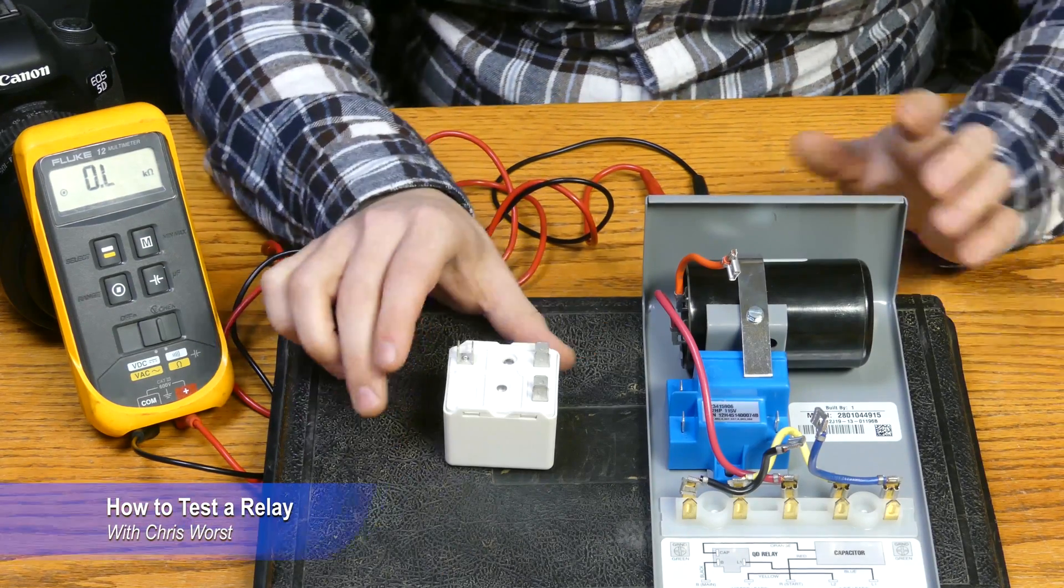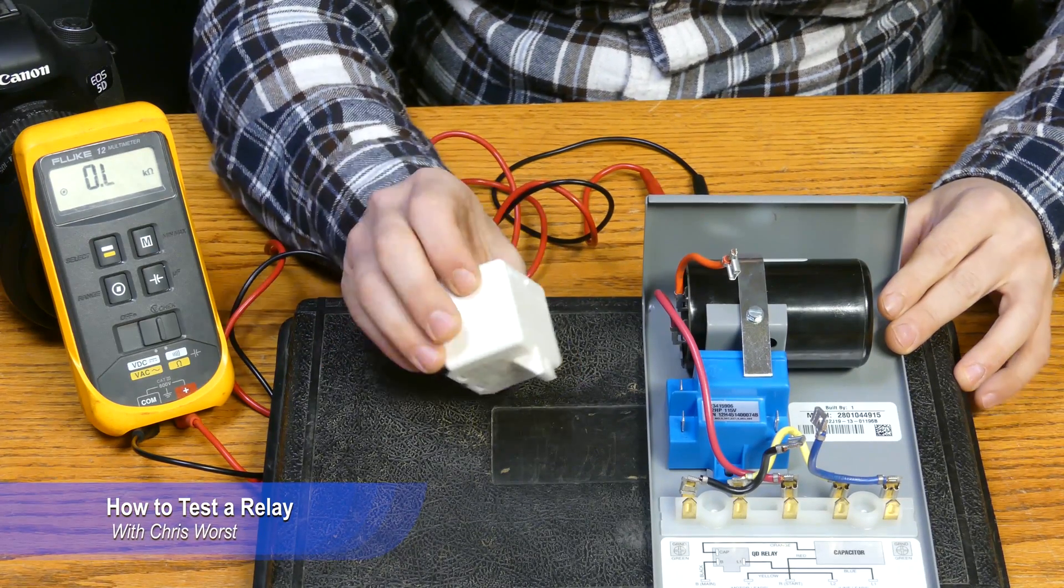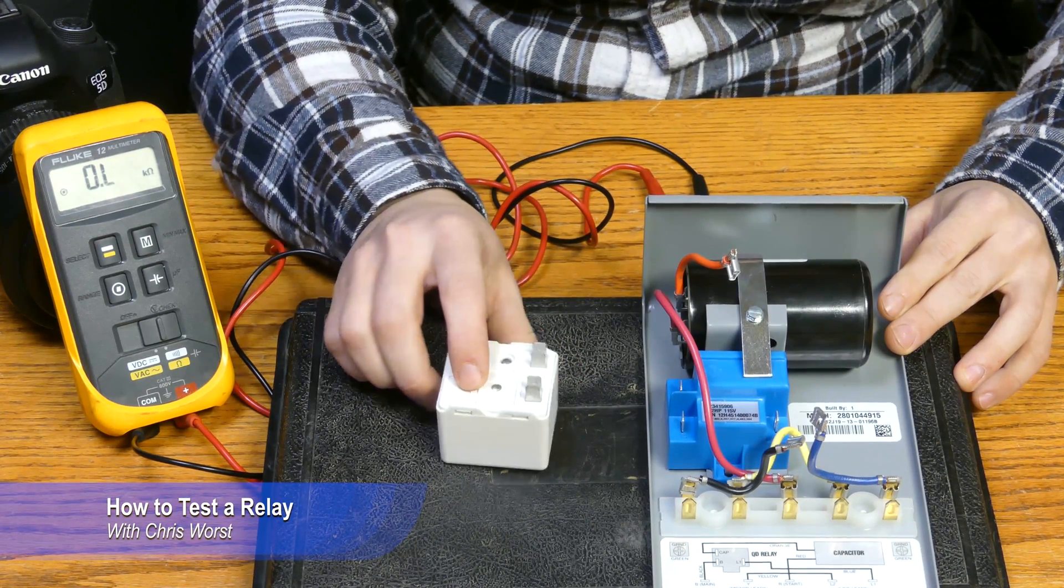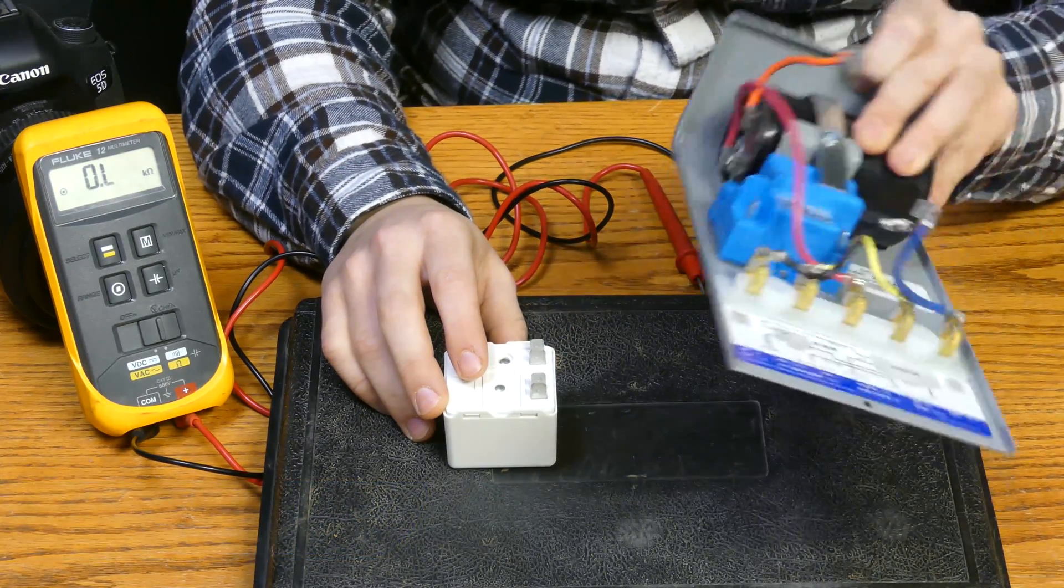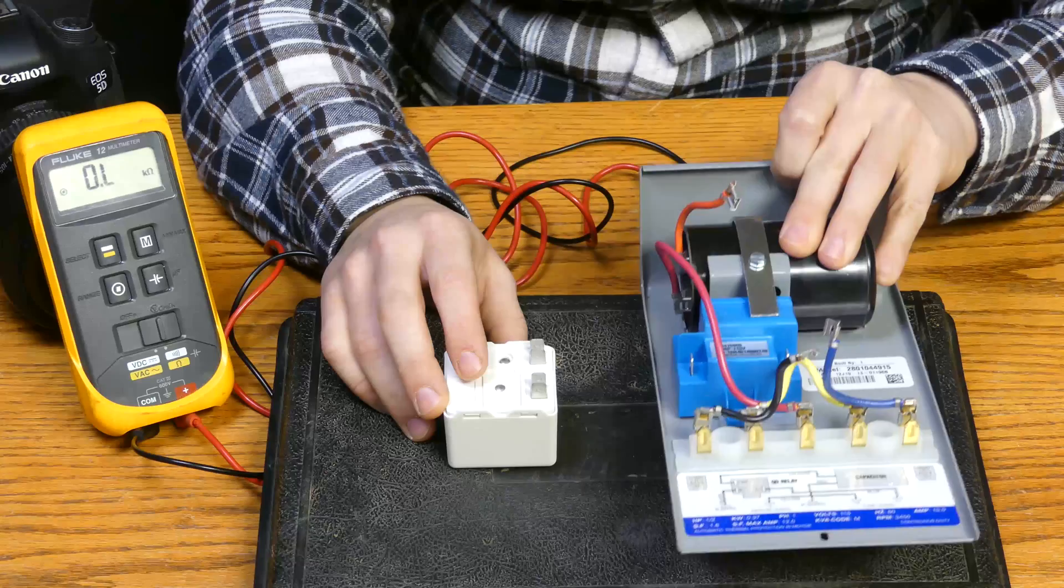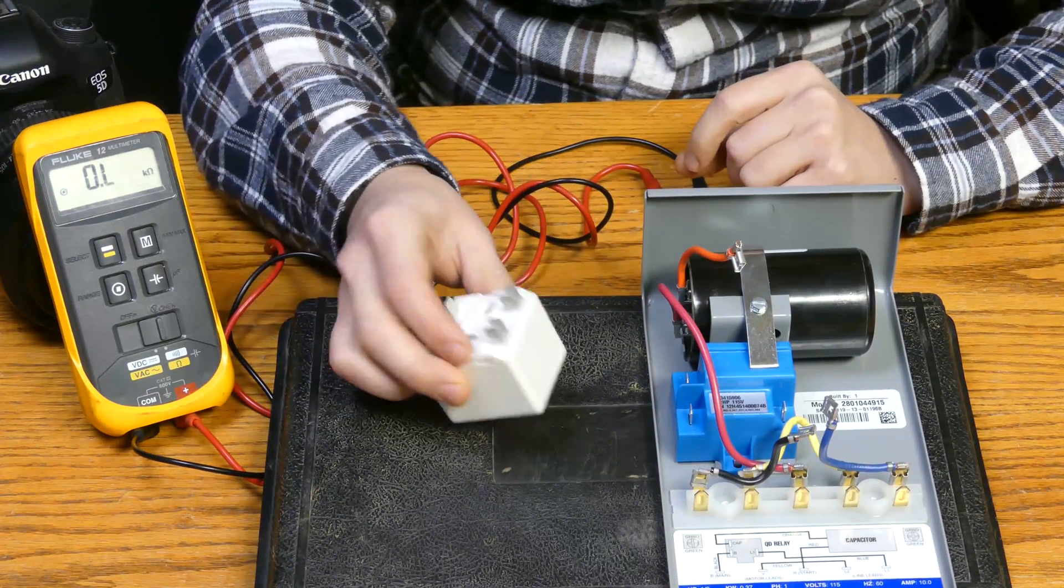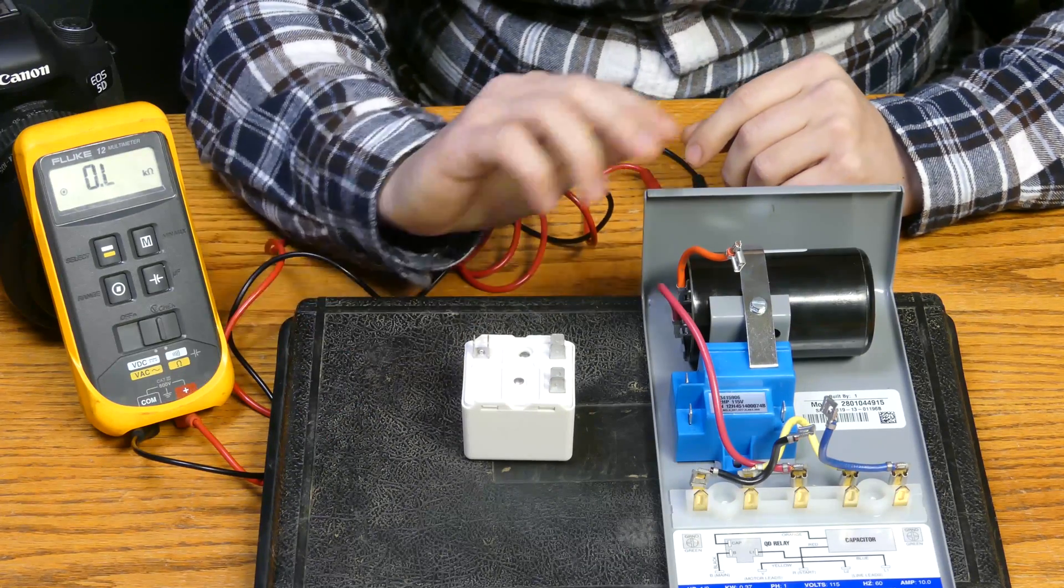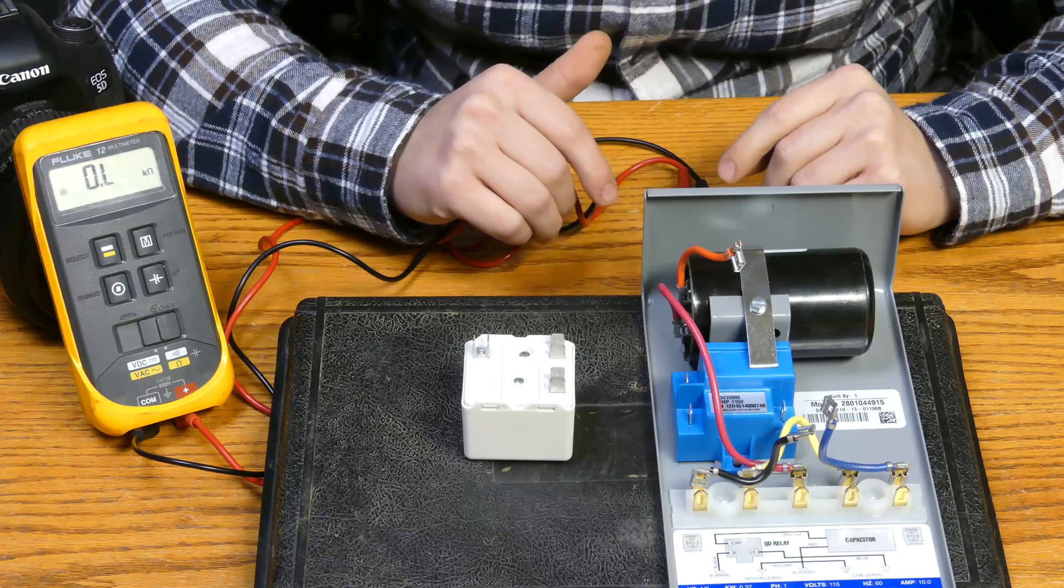Okay, so we're just going to jump into today's video. We've got two different relays we're going to show you how to test depending on the horsepower of your motor. You might have the smaller QD style, so we've just got a QD control box here. We went ahead and pulled the leads off, or you might have one of these larger relays here. Actually, they're two completely different types of relays, so we're going to show you how to test both.